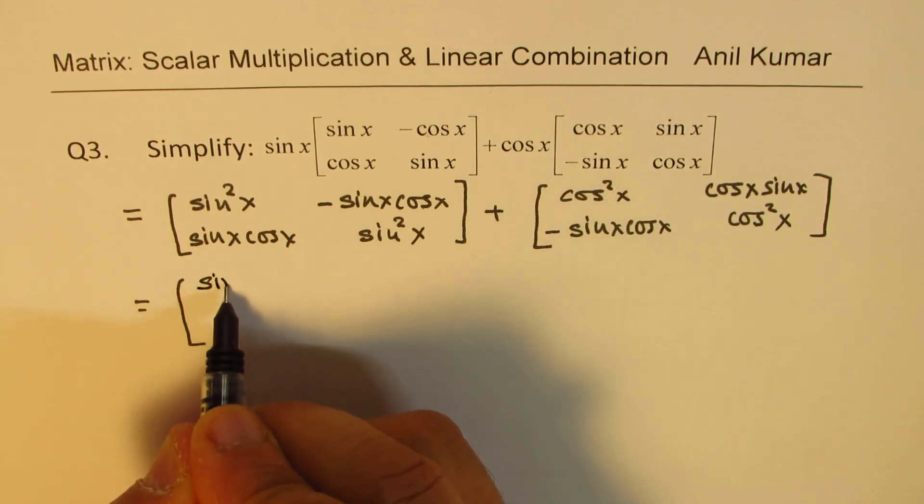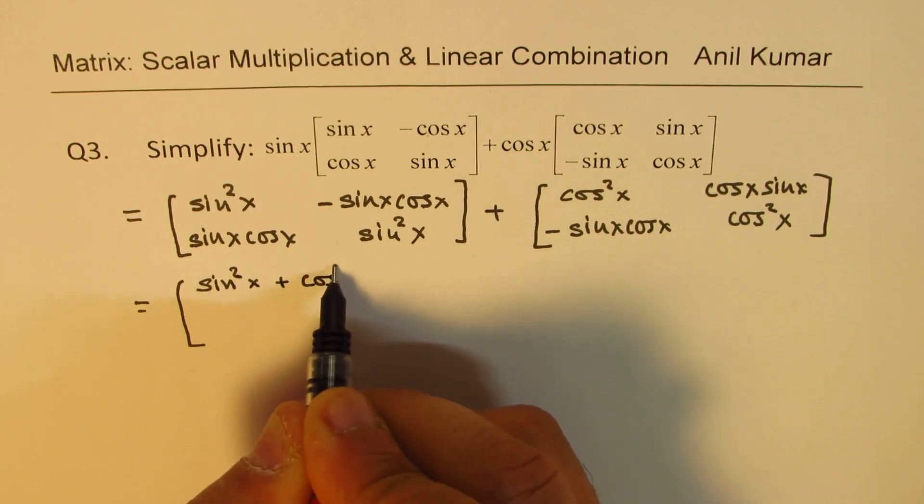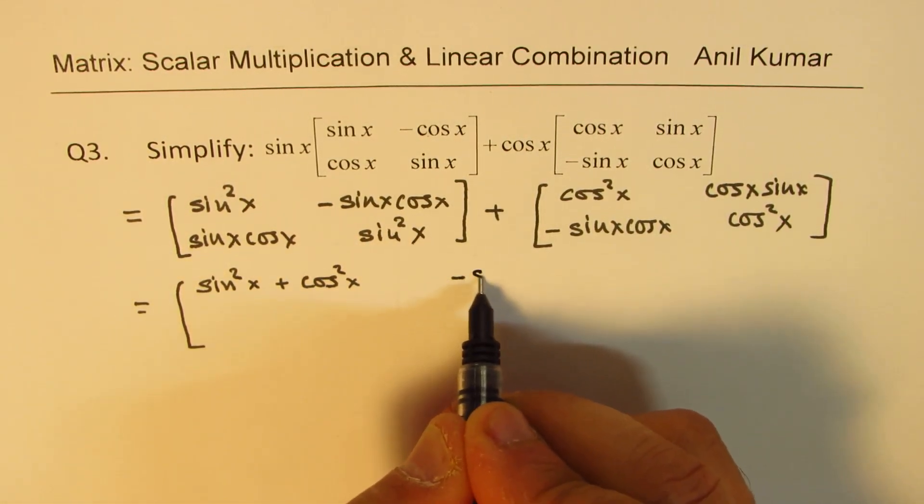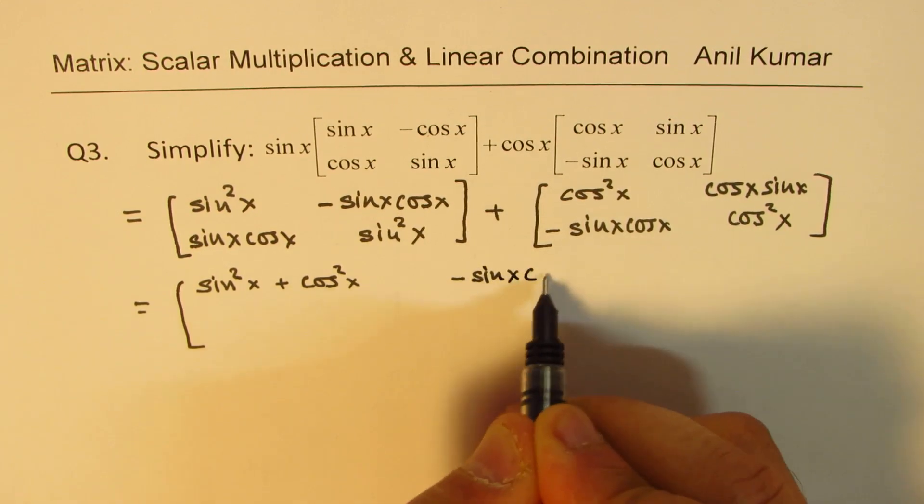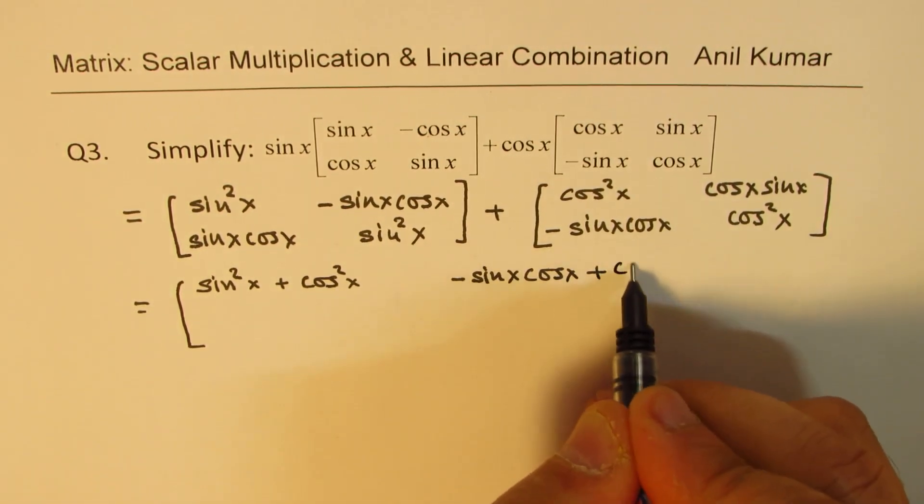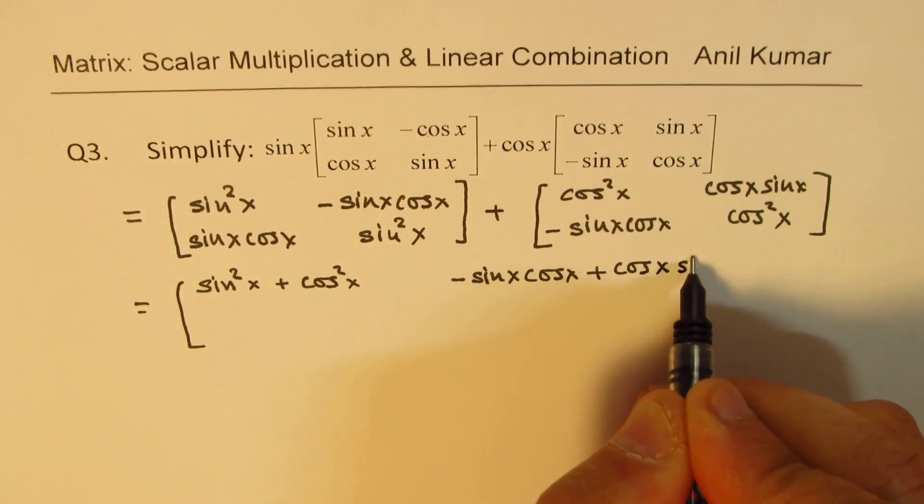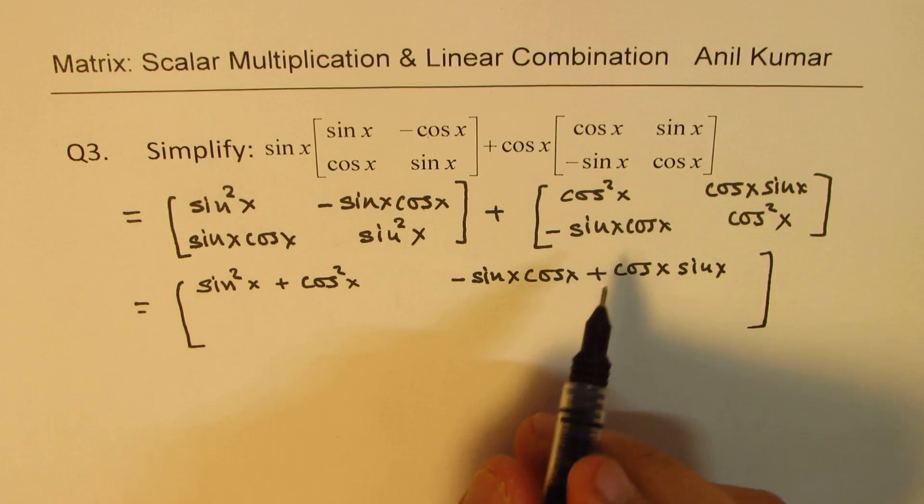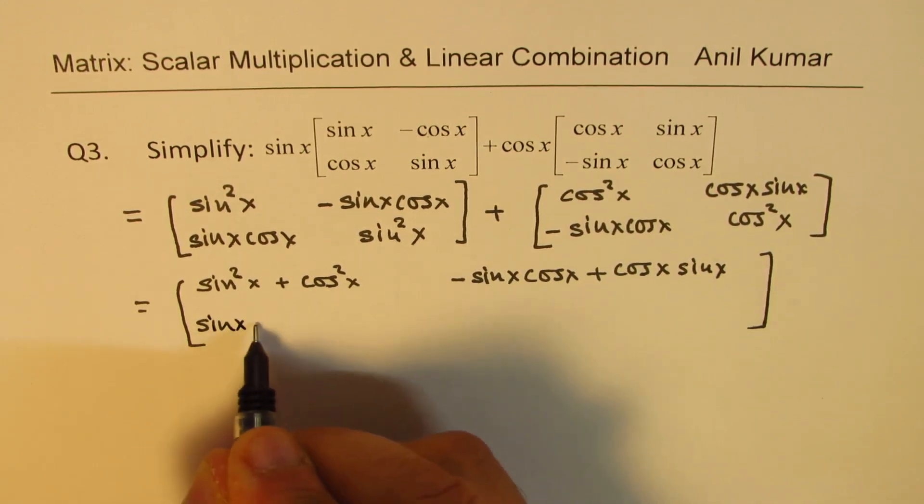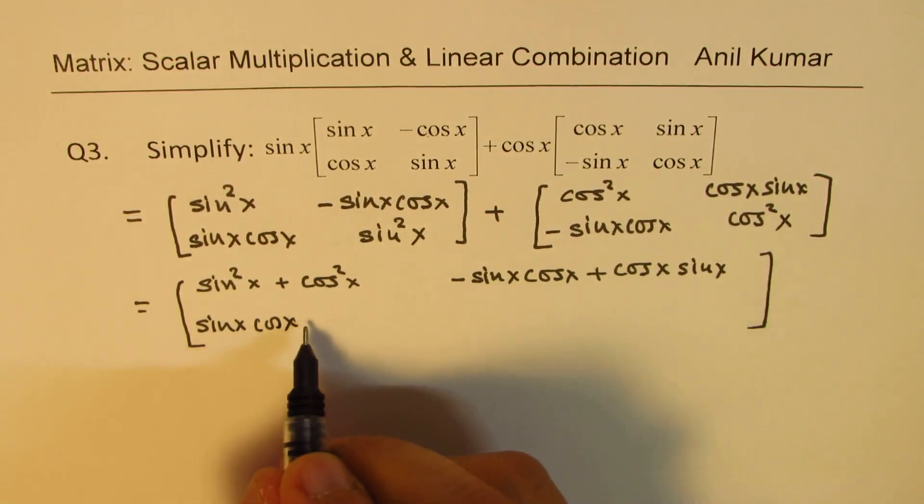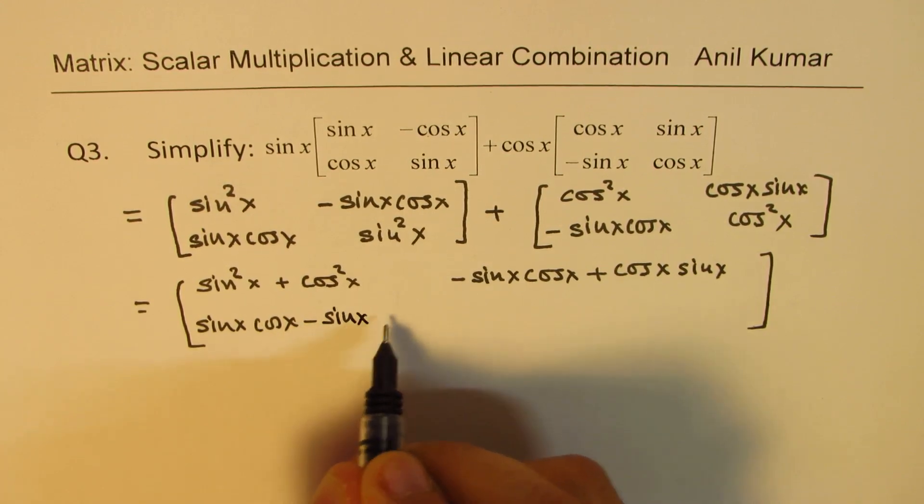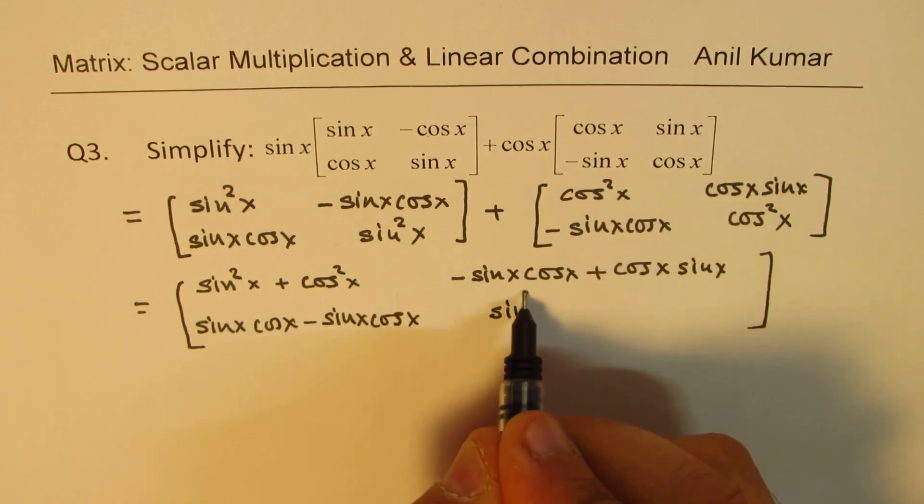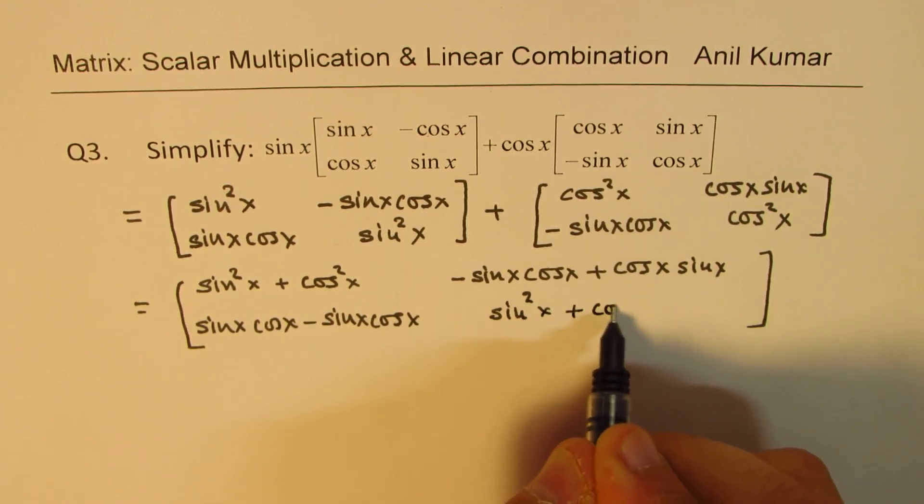Now let's combine them. So we get sine squared x plus cos squared x. And then we get minus sine x cos x plus cos x sin x. Here we get sine x cos x minus sine x cos x, and this one gives us sine squared x plus cos squared x.